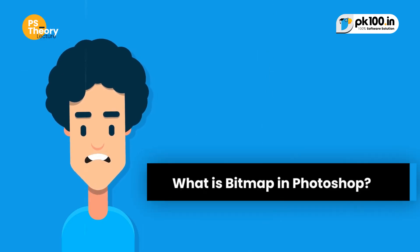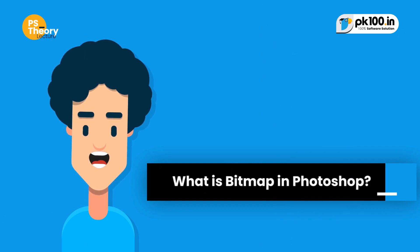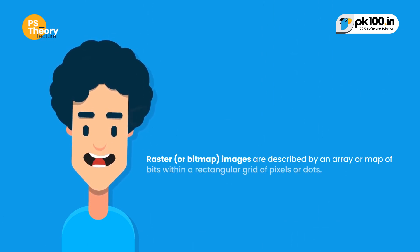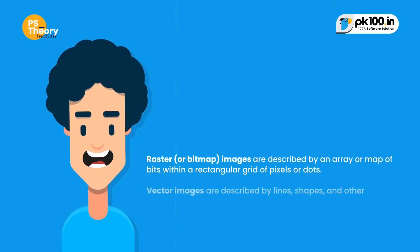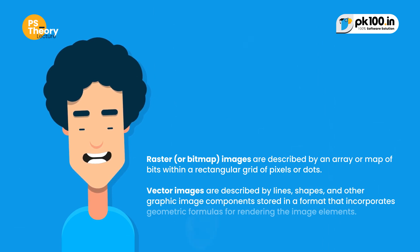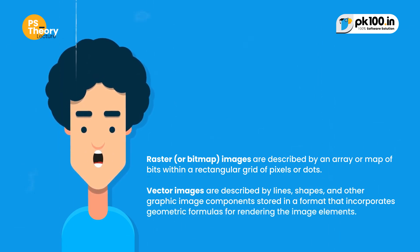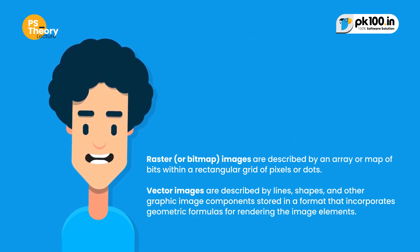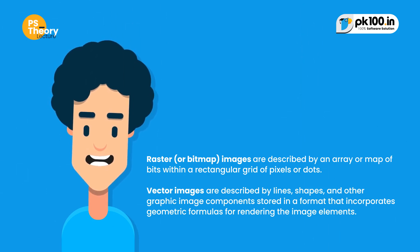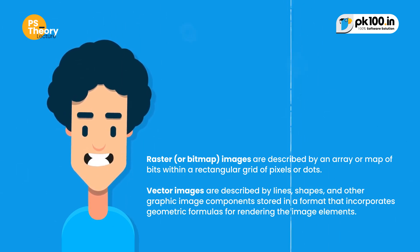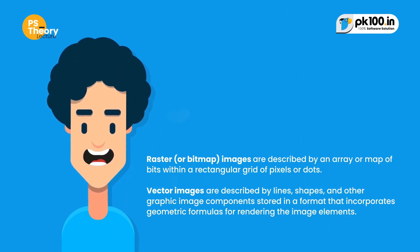Now, what is bitmap in Photoshop? Raster or bitmap images are described by an array or map of bits within a rectangular grid of pixels or dots.